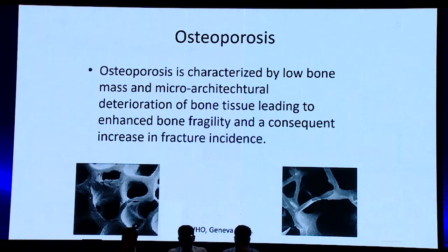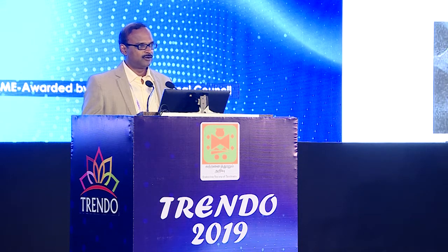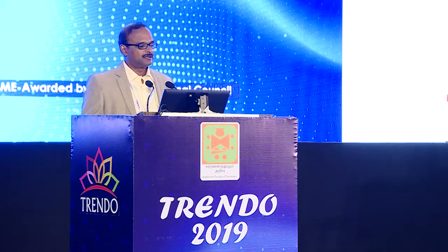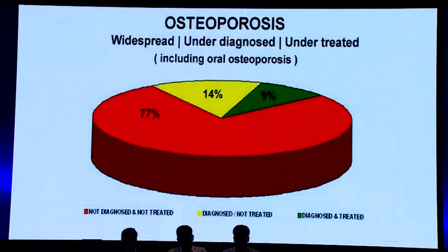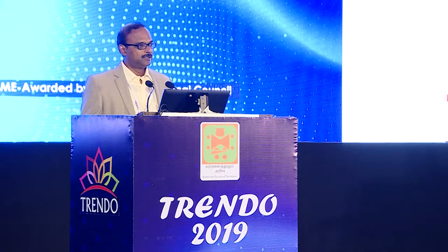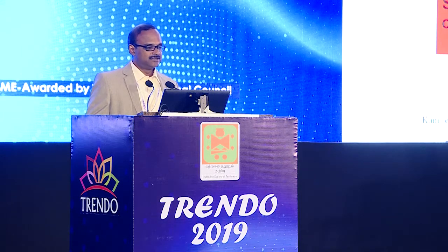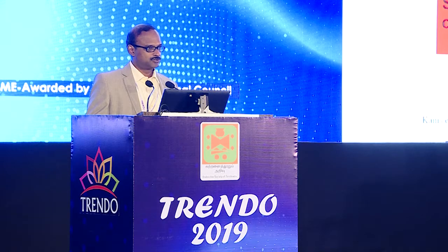Fragility fractures occur because of osteoporosis, which is characterized by low bone mass and micro-architectural deterioration causing weak bones and making them easy to fracture. As you can see in this picture, the first bone is normal with normal mineralization and is strong; the one on the right is weaker because of osteoporosis. It is widespread — only 9% of patients with osteoporosis are treated, about 75% are not diagnosed at all, and 14% are diagnosed but not treated. WHO criteria for diagnosis through DEXA scan is a T-score of minus 2.5 or less.